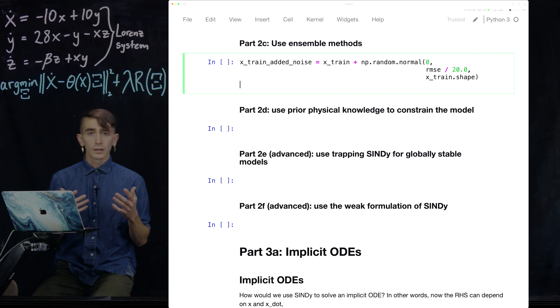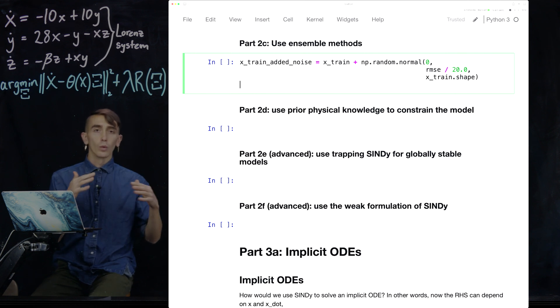Basically ensembling is just subsampling the data and using those subsamples to actually generate many different models, which allows you to get probabilistic system identification and figure out which coefficients show up a lot and which ones don't.